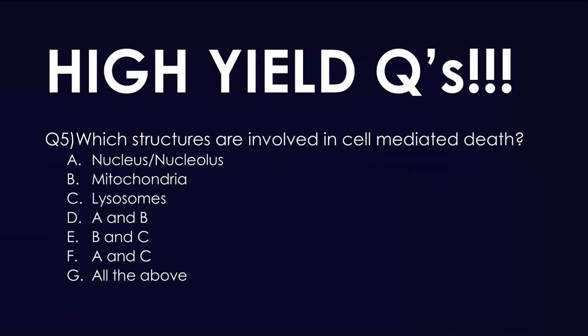Question five: which structures are involved in cell-mediated death? The answer is G: all of the above. The nucleus and nucleolus are important because they control the cell and can signal apoptosis. Mitochondria are important because damage to the mitochondrial membrane releases cytochrome C, causing apoptosis. And lysosomes play a huge role in apoptosis due to their enzymes that cause autodegradation of the cell. That's why all of the above is the answer.